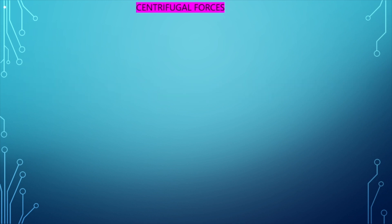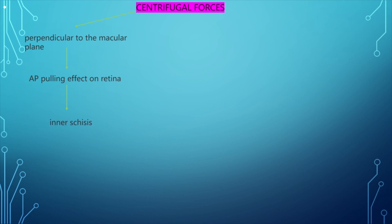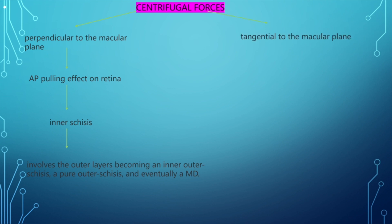There are two types of centrifugal forces. The first is perpendicular to the plane of the macula. It causes an anterior-posterior pulling effect onto the retina which can lead to inner schisis, progressing to involve the outer layers, becoming an inner-outer schisis, then a pure outer schisis, and eventually a macular detachment.